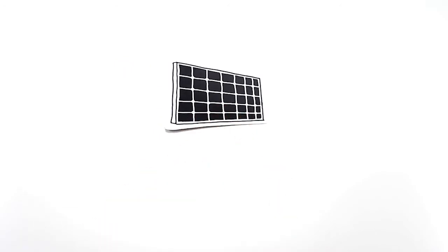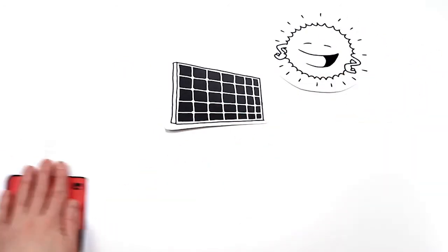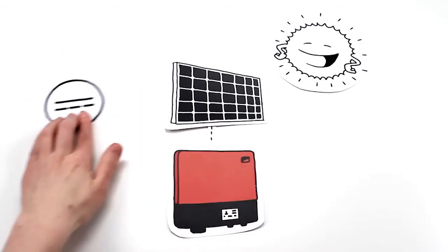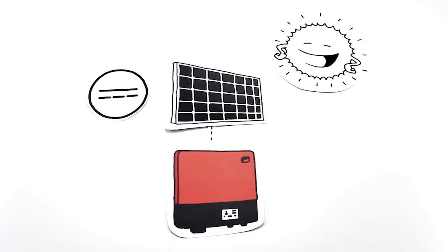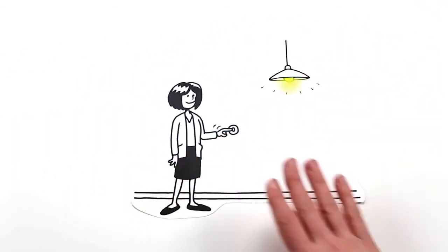The solar panels capture sunlight and convert it into solar DC power. The solar DC power passes through the inverter and is converted into alternating current. Alternating current is the current coming out of your wall outlet.